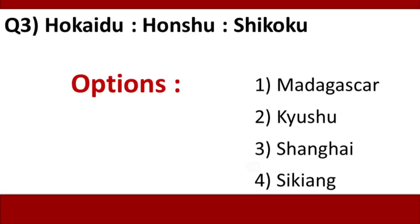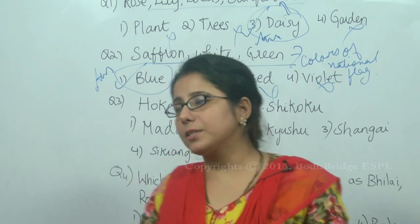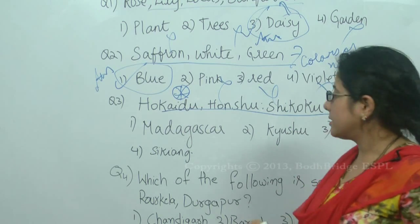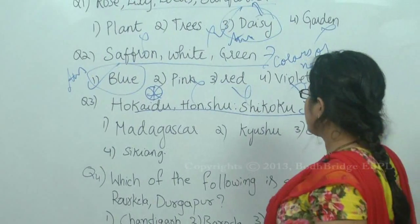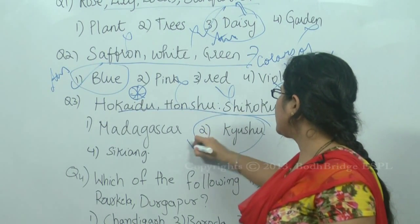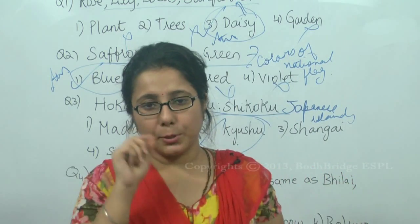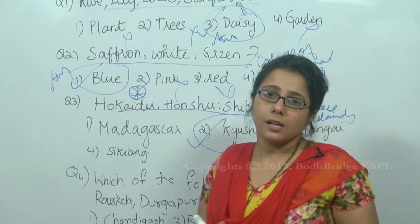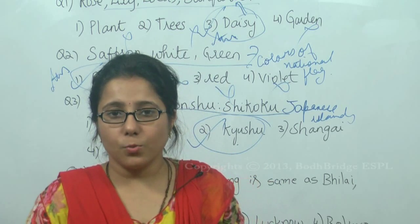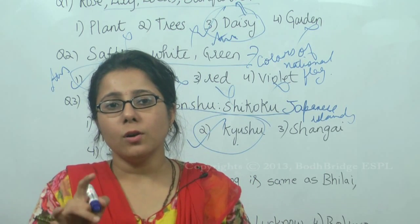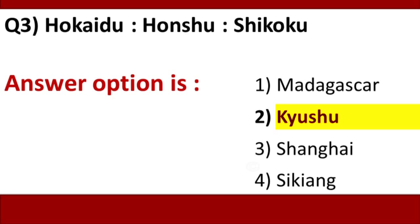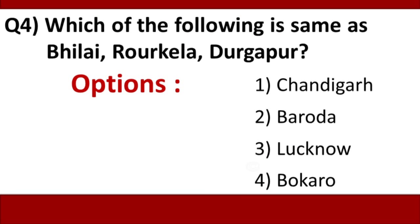Question 3: Hokkaido, Honshu, Shikoku. Options are: Madagascar, Kyushu, Shanghai, Sikiang. This question was asked in exams. Hokkaido, Honshu, and Shikoku are Japanese islands. Option 2, Kyushu, is also a Japanese island, so that is the answer. Shanghai is a city, not an island, and Madagascar is not a Japanese island. The answer is option 2.